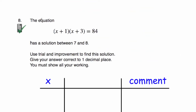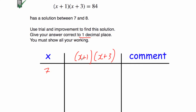Question 8: the equation (x+1)(x+3) equals 84 has a solution between 7 and 8 — find an answer correct to one decimal place. We can use brackets on the calculator. Let's try 7: (7+1)(7+3) equals 8 times 10 equals 80. We want 84, so that's too low. Let's try 8: (8+1)(8+3) equals 99 — too high. It's much closer to 7 than 8, so let's try 7.2: that gives 83.64 — too low.